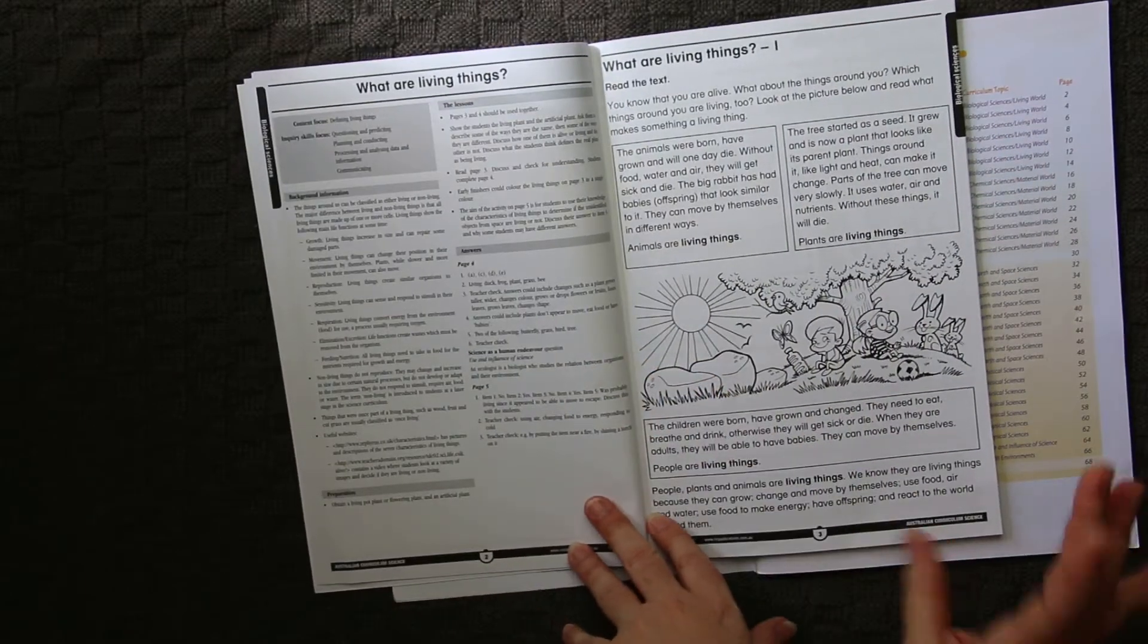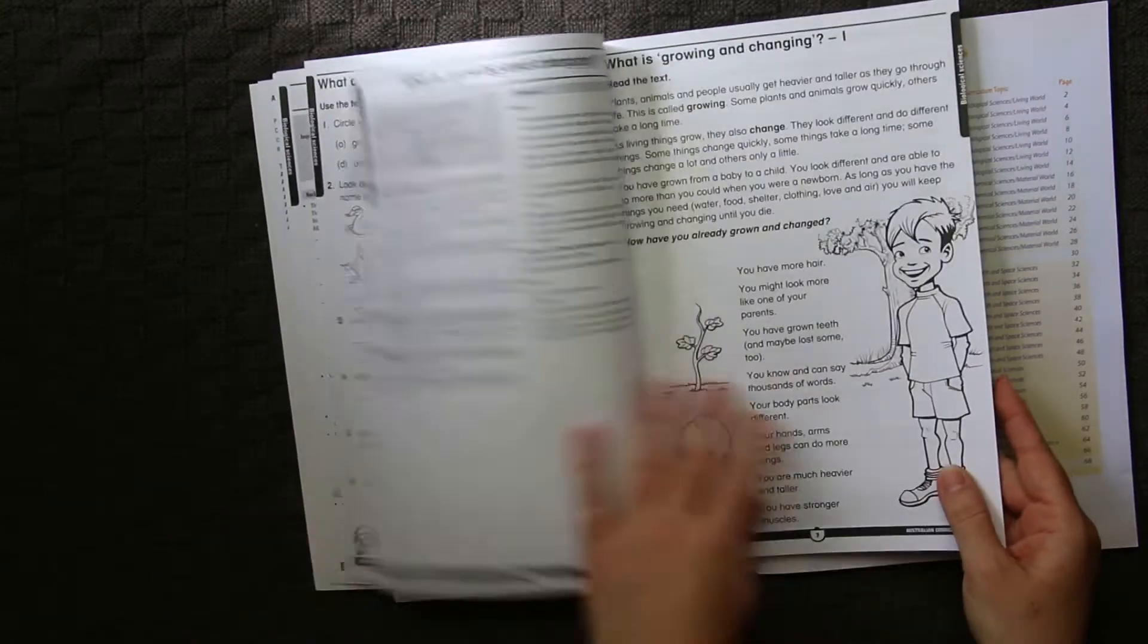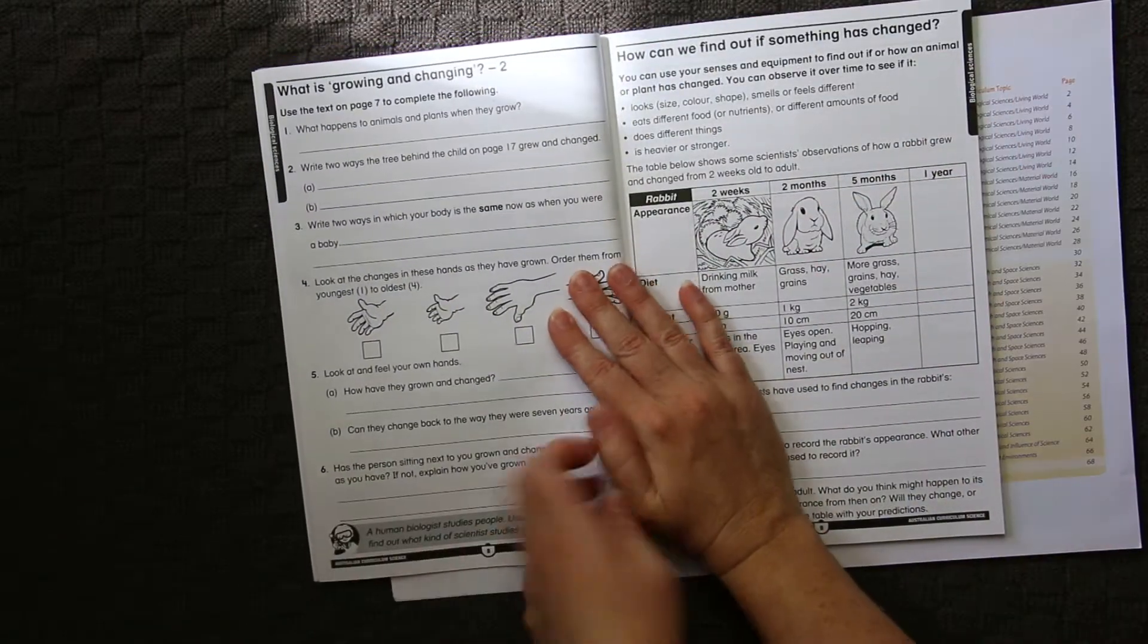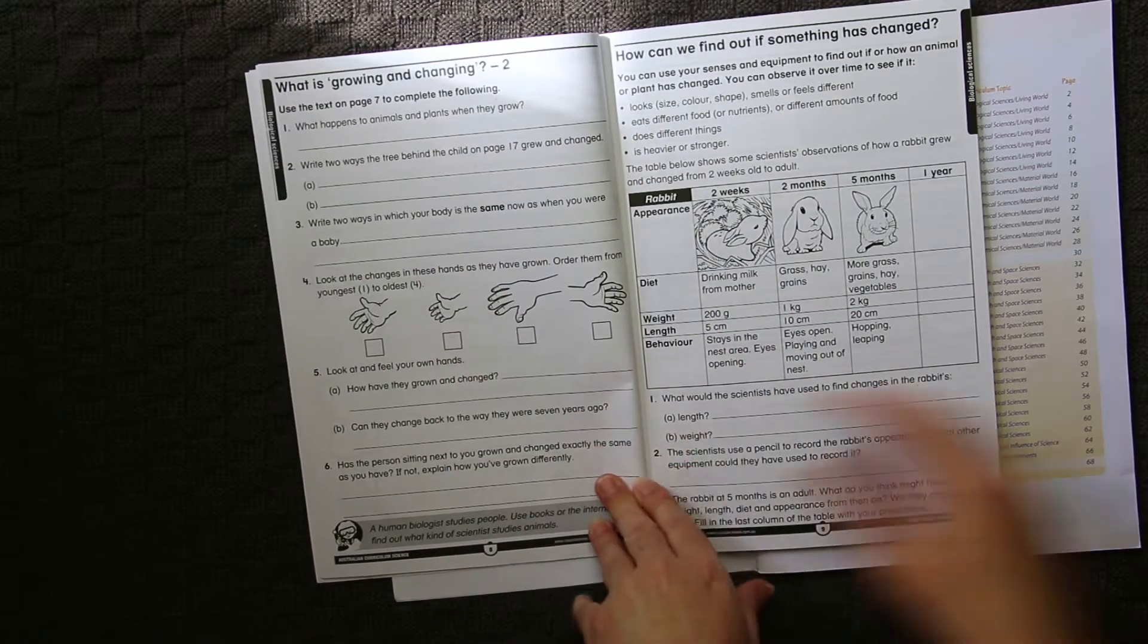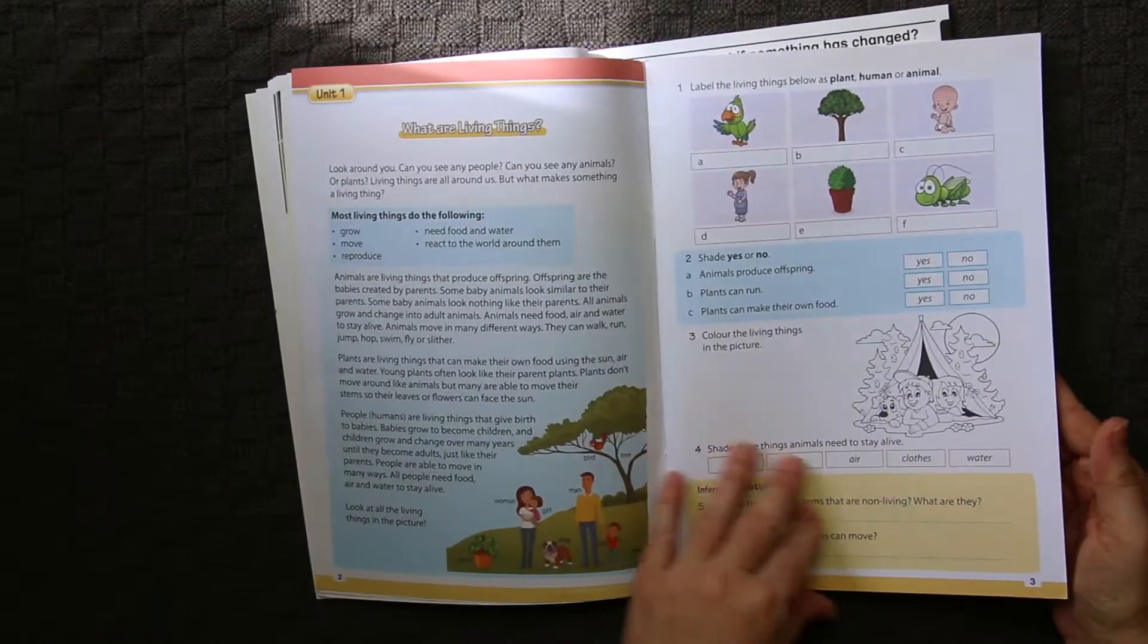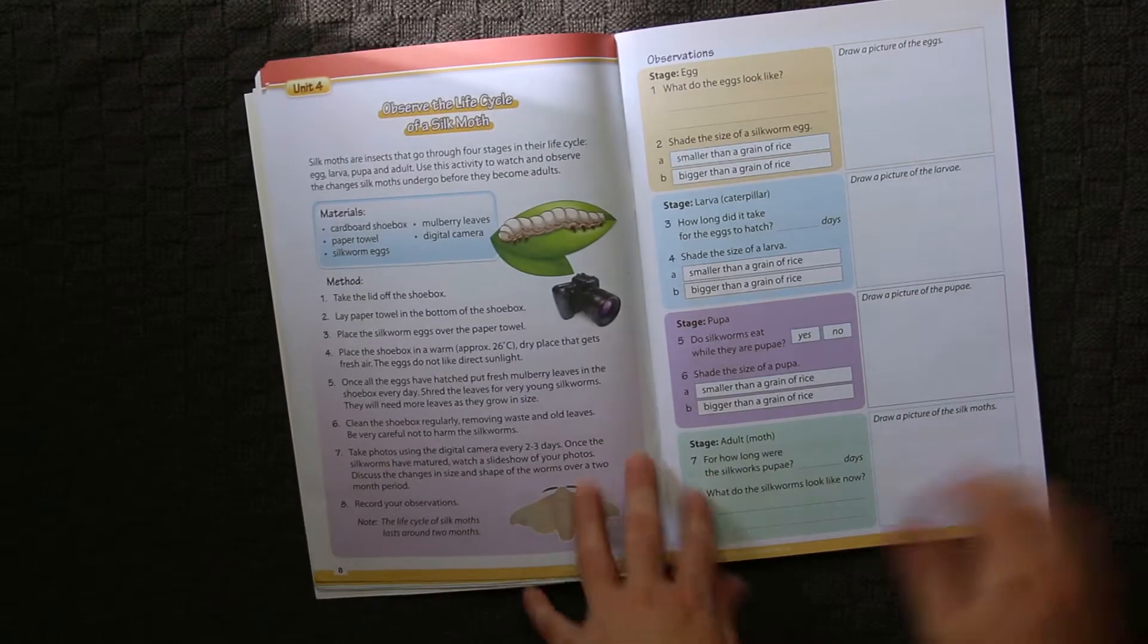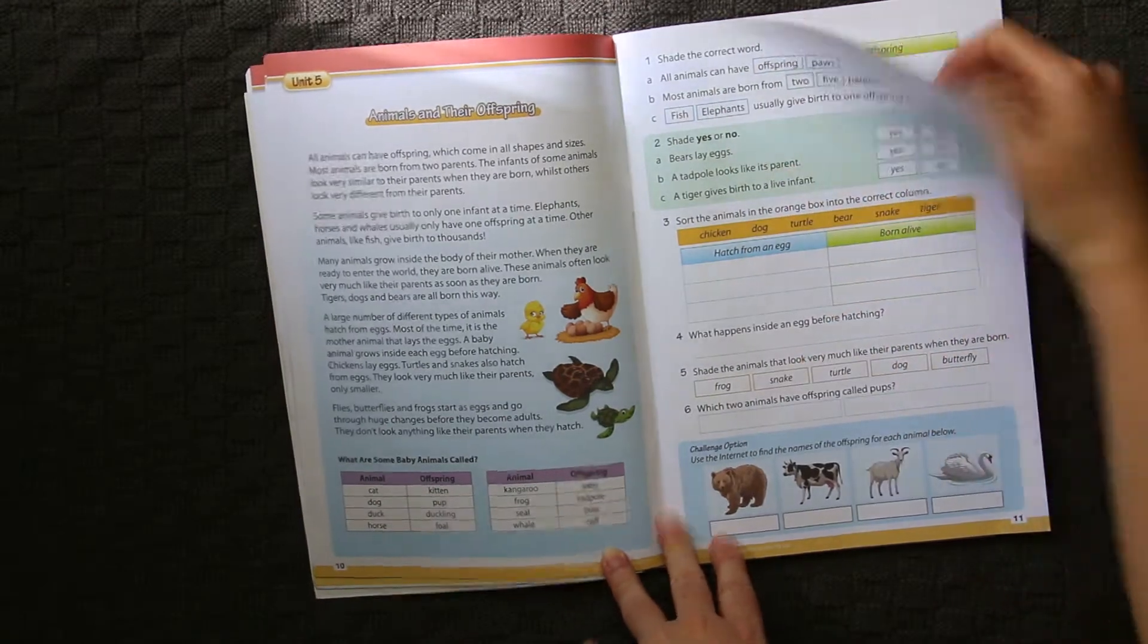Then it gets into the lessons, and each lesson is pretty much the same. It has the teacher guide, then the actual text for the child to read or to be read with an adult, and then the worksheet component. Whereas this one, as I said before, doesn't actually have a teacher guide as such. It's really self-guided. You read the information, do the worksheet.